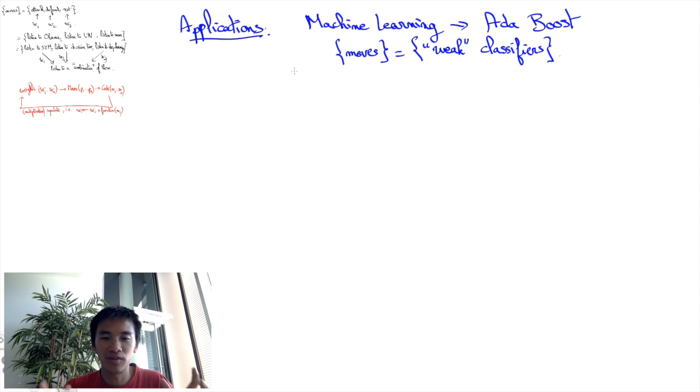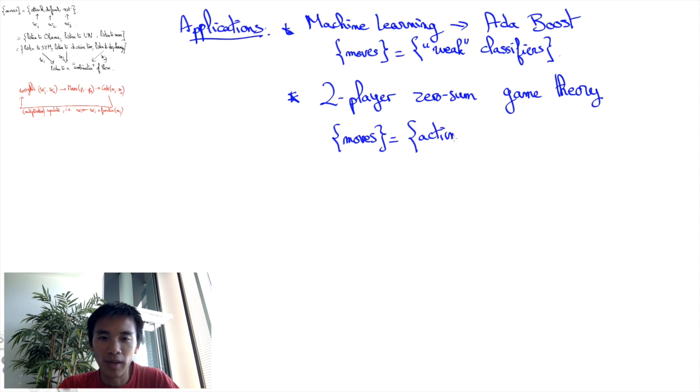Another application is the computation of minimax strategies in two-player zero-sum game theory. Here, the problem is to determine the two players' optimal strategies. Each player has a finite set of actions